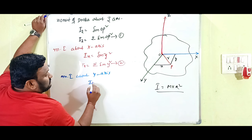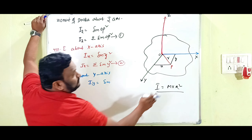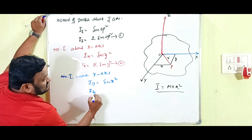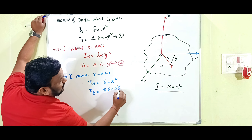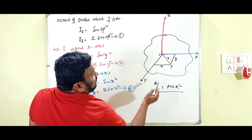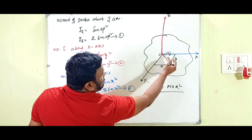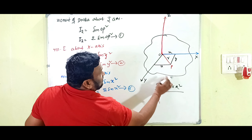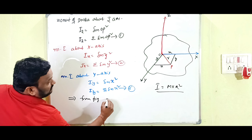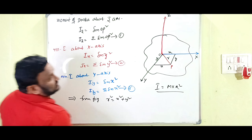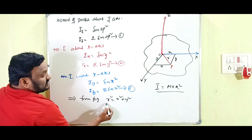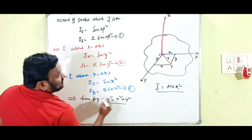The moment of inertia about the Y-axis is I_Y = Σ(delta-m × x²), which is equation (3), since x is the distance from the Y-axis to the particle. Now, according to the diagram, OP² = x² + y², because OP is the hypotenuse and x and y are the two sides. So from the figure: r² = x² + y².